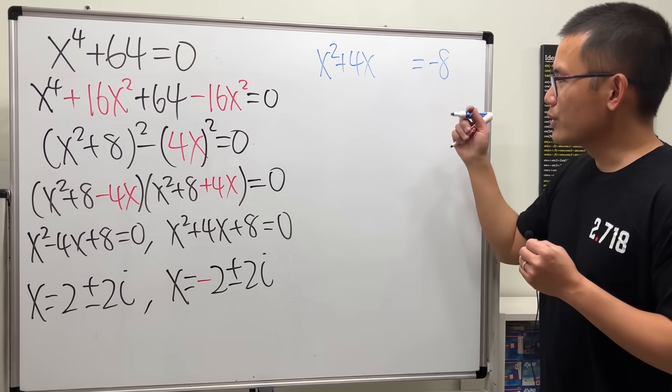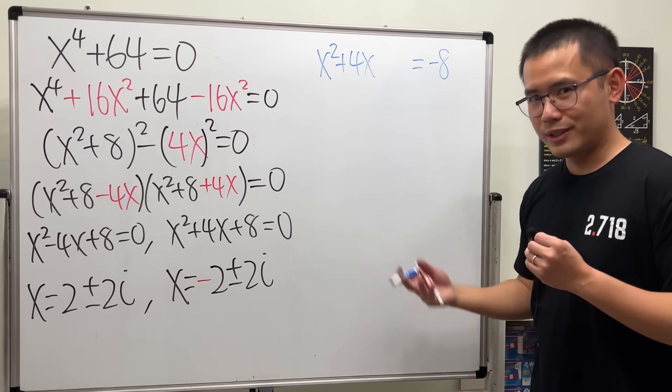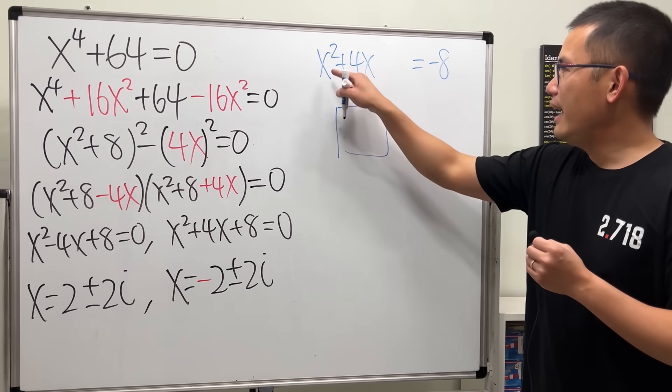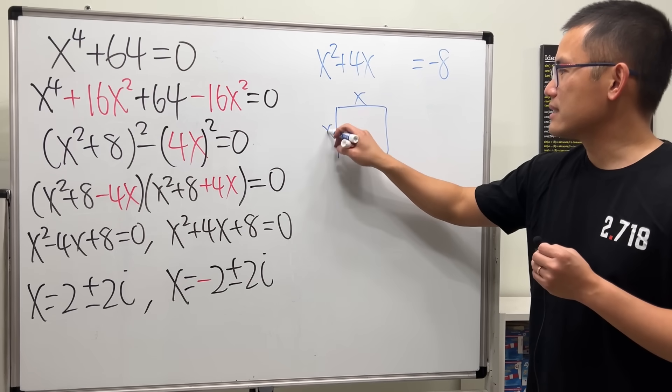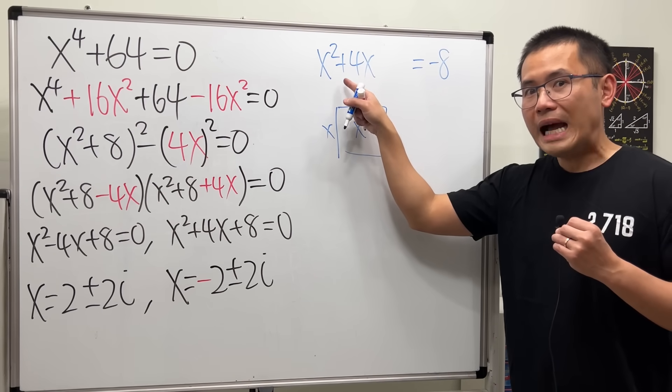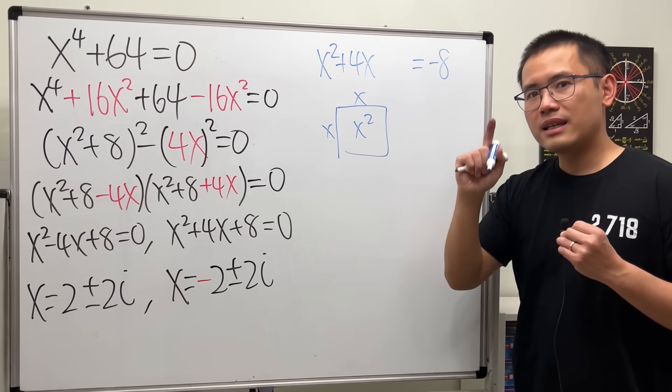We can still draw the square. So, have a look. x squared means x and x. We can get x squared. This time, though, we are adding 4x. Cut that into two parts. Do not just say this is 4 and then x.